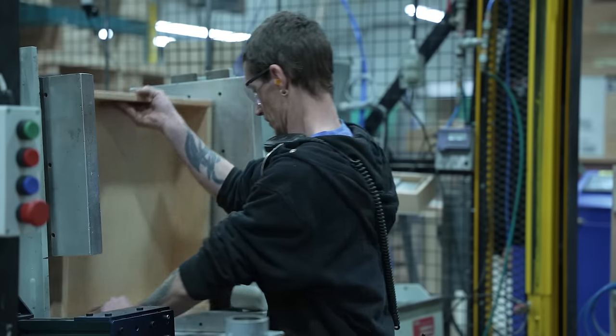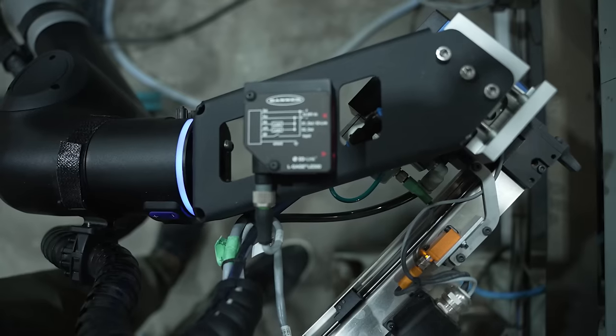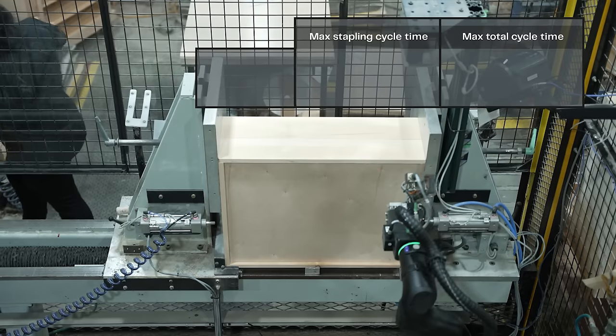Once done, the employee loads the drawer in the press and presses the cycle start button. Station then uses multiple lasers to determine the size of the drawer and the PLC calculates the correct trajectory and calls for the robot to start the stapling sequence.